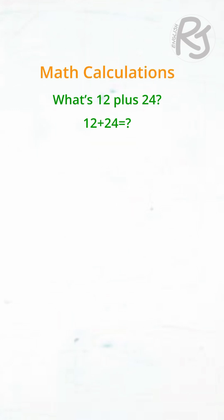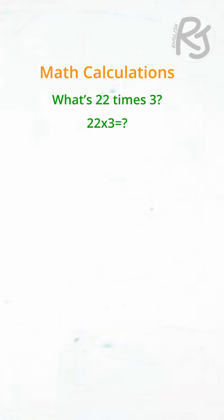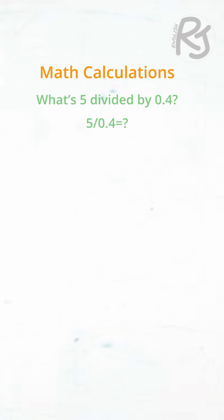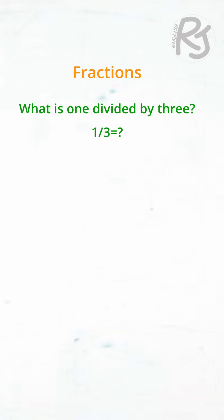What's 12 plus 24? It's 36. What's 101 minus 99? It's 2. What's 22 times 3? It's 66. What's 22 multiplied by 2? It's 44. What's 5 divided by 0.4? It's 12.5. What's 1 divided by 3? It's 1 third.